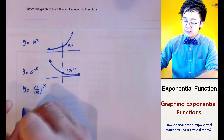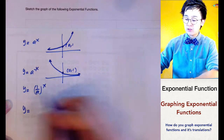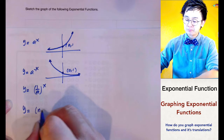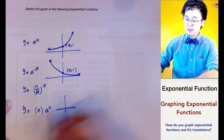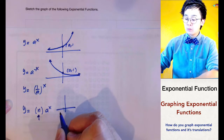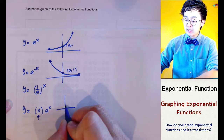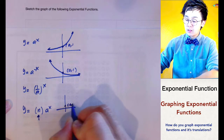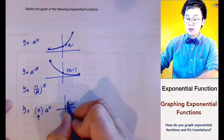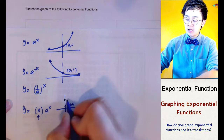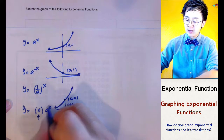In some cases, you will encounter a function with a constant or factor, such as n times a to the x. In this case, that number n determines your y-intercept. So instead of the y-intercept being at (0, 1), it will be at (0, n). If n is a positive number greater than 1, the y-intercept moves up and the graph is still increasing because the exponent is positive.